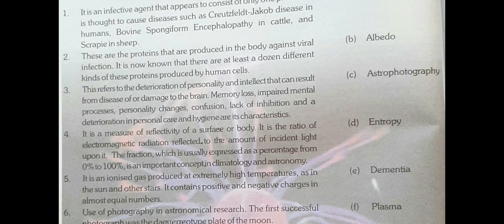Then you have the next term: plasma. What is plasma? Plasma is an ionized gas produced at extremely high temperatures, as in the sun and other stars. It contains positive and negative charges in almost equal numbers.